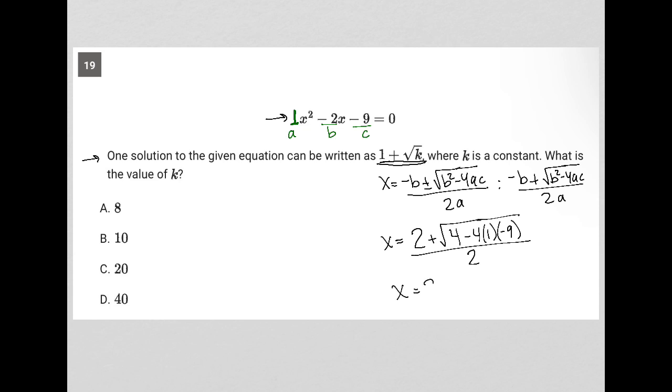So I have x is equal to 2 plus the square root of, 4 times 1 is 4, times 9 is 36, plus 4 is 40, so it becomes square root of 40, all over 2.